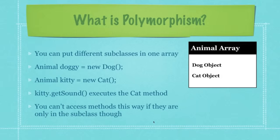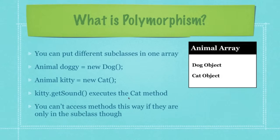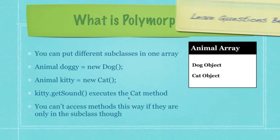In this situation, you have doggy, which is really a dog, but we think of it as an animal, and kitty, which is really a cat but we also look at it like it's an animal. In doing so, we're going to be able to create arrays that have a bunch of animal objects. However, if you call kitty get sound, because of polymorphism, it's automatically going to execute the cat method instead of the get sound method for animal. Just remember that you can't access methods this way if they are only in the subclass — and that is where abstract classes, abstract methods, and interfaces come in.